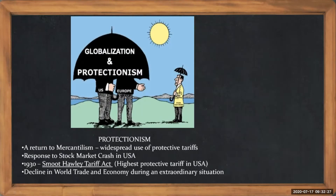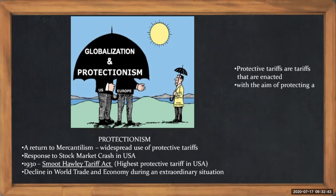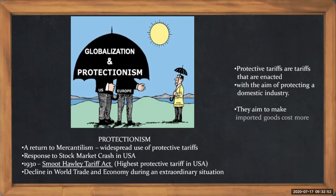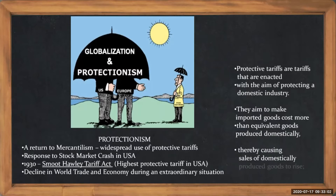When all these things happen, governments normally react and there's something called protectionism — protective tariffs. These are tariffs that are enacted with the aim of protecting a domestic industry. They aim to make imported goods cost more than equivalent goods produced domestically, thereby causing sales of domestically produced goods to rise. This is a little advanced definition but it is in your book and you need to remember it.